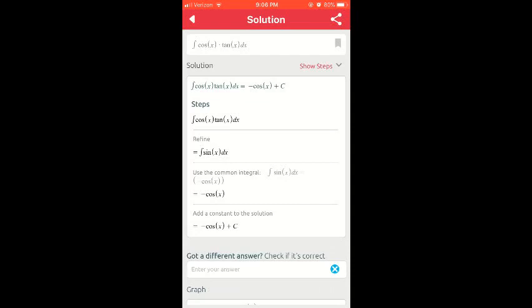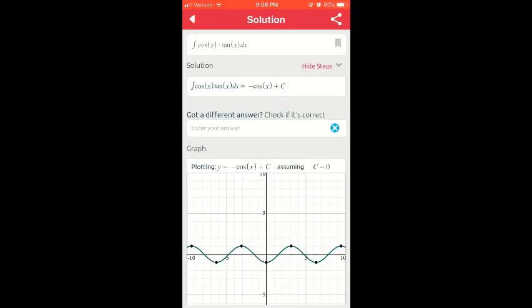The step-by-step solutions will always default to showing all the steps at once. However, you can change this. Click the drop-down by show steps. If you only want to see the solution without the steps, click hide steps.